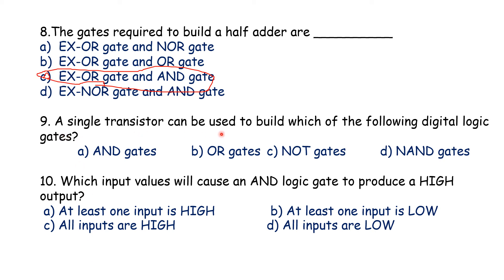A single transistor can be used to build which of the following digital logic gates? A transistor can be used as a switch. When the base is low, the collector is high — input zero, output one. When the base is high, the collector is low — input one, output zero. This behavior corresponds to a NOT gate. Option C, NOT gate, is the correct answer.